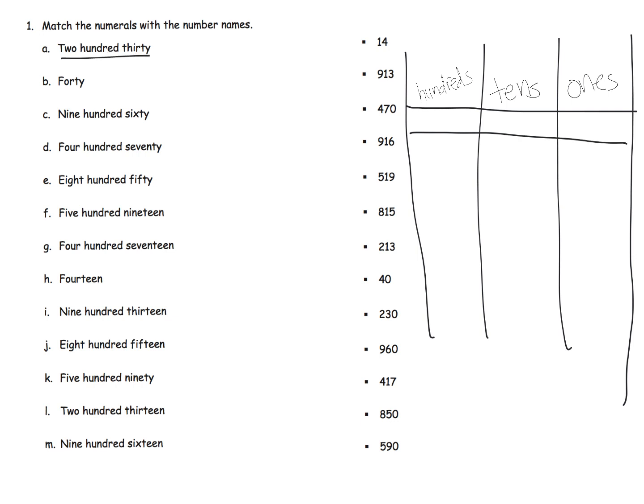So 200 means we've got 2 in the hundreds. 30 means we have 3 in the tens — because that's 10, 20, 30. And we have nothing in the ones, so we're going to put in a zero. So our connection for 230 goes way down to here.